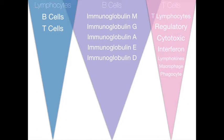Interferon causes non-infected cells to form an antiviral protein that slows or stops viral multiplication. Interferons are grouped into three categories: alpha, beta, and gamma. Lymphokines, which are produced by the T cells, direct the immune response by signaling between the cells of the immune system and attract macrophages to the infected site, preparing them to attack. A macrophage, which is a type of phagocyte, protects the body by ingesting invading cells. A phagocyte is a large white blood cell that can ingest and destroy substances such as cell debris, dust, pollen, and pathogens. This process is known as phagocytosis.